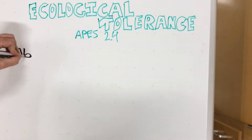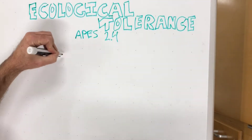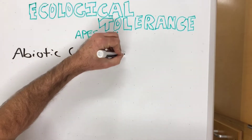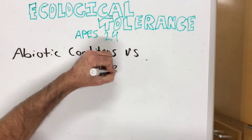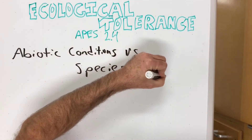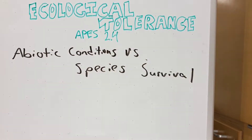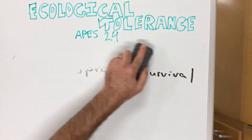Ecological tolerance is defined as the range of abiotic factors under which species can survive, and abiotic means non-living factors.